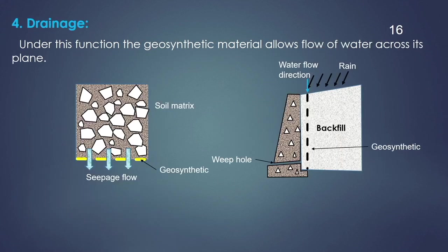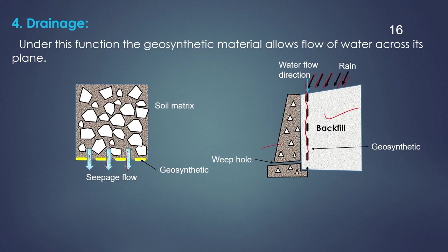Next comes the drainage function. Under this function, the geosynthetic allows the movement of water through it. We know that the presence of water is detrimental to many structures. Pore water pressure will develop, and if water is not removed, it will bring instability to the structure. As a drainage layer, geosynthetics allow a clear passage to the water along it. For example, in a retaining wall, water coming to the structure can be drained out using geosynthetics acting as a drainage layer, and ultimately removed through weep holes.